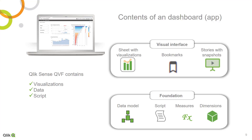Qlik Sense's in-memory approach provides the ability to extract data from a multitude of data sources. When data enters Qlik Sense, it is copied or loaded into a very compressed data model. This data model can support hundreds of millions or even billions of rows of data, which then enables associative search and analysis of all your data, not just a subset of that data.